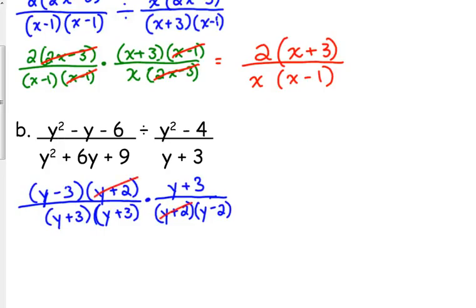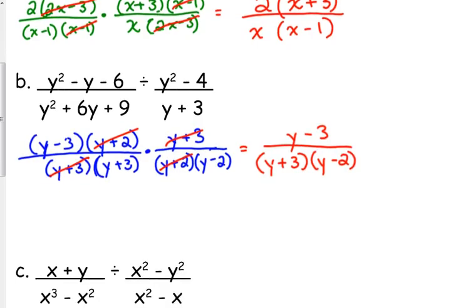So we've got a y plus 2 in the top and the bottom. We've got a y plus 3 in the top and the bottom. So we're left with y minus 3 on the top over y plus 3 times y minus 2. You do have to be very careful with these because that's as simple as it will go. But if you messed up a sign there, you're going to end up canceling out something that should not be canceled.